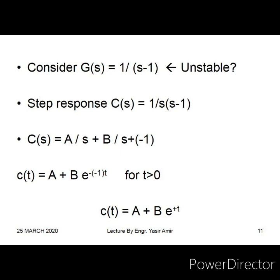Whenever we have poles on the right-hand side of the j-omega axis, we say the system is unstable just by looking at the transfer function. An unstable system means its transient response should grow unbounded. We consider the step response of the system — input is a unit step (1/s). The response is C(s) = 1 / [s(s-1)]. Using partial fraction expansion: C(s) = A/s + B/(s-1).